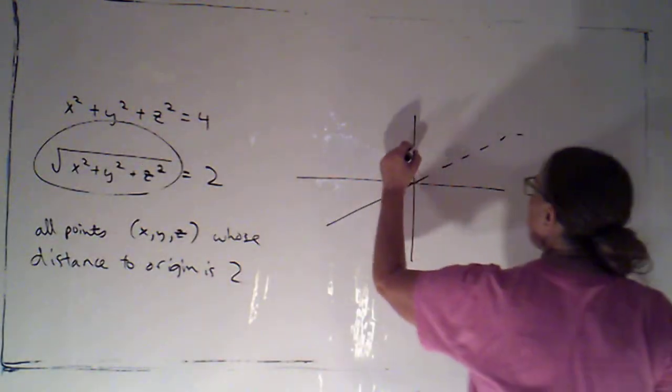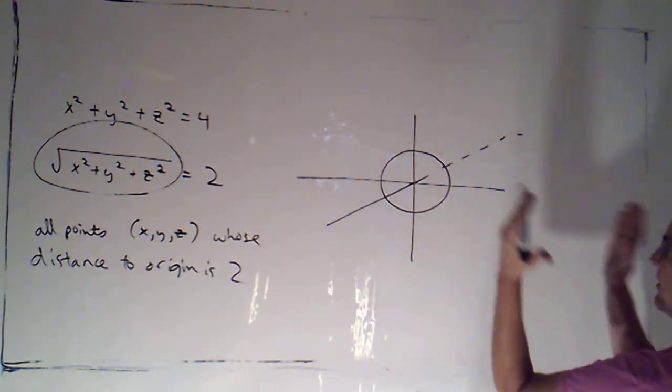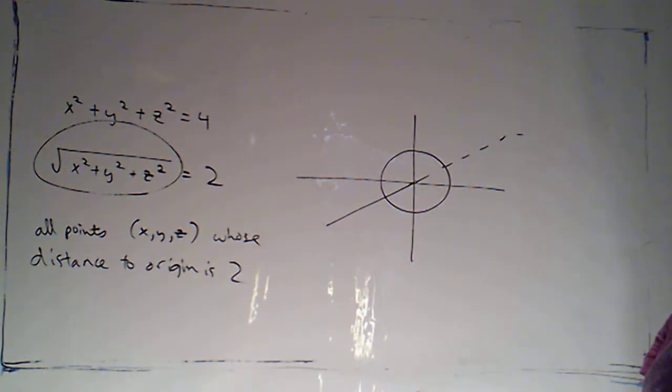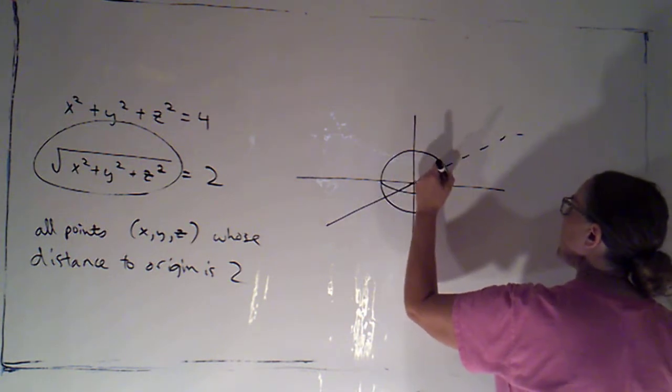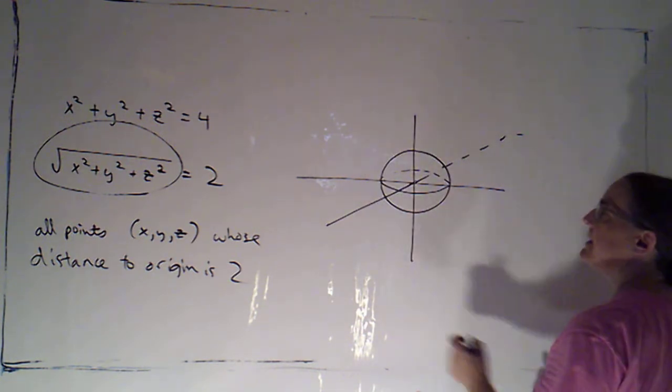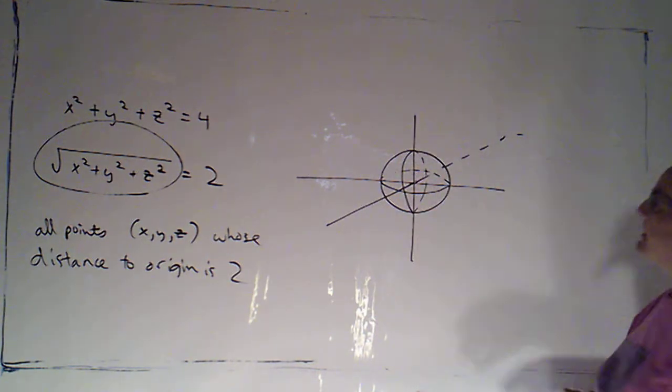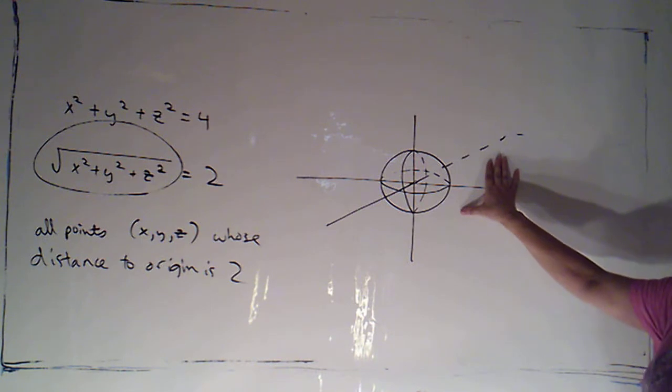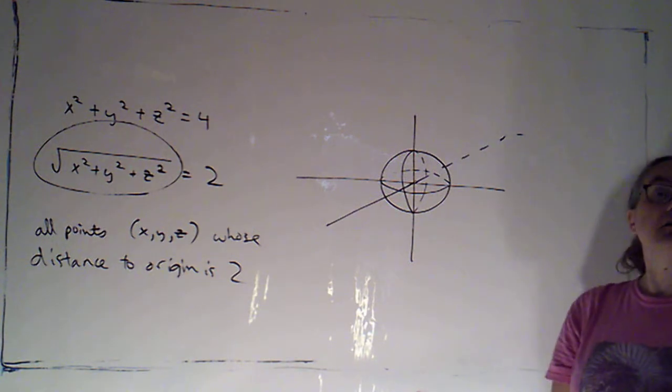So in the yz plane, which is the simplest one because that's the one I'm looking at straight on, I would have a circle. And in the xy plane, I would have a circle. And in the xz plane, I would have a circle. And if I draw those three cross sectional circles, this really does suggest a sphere.